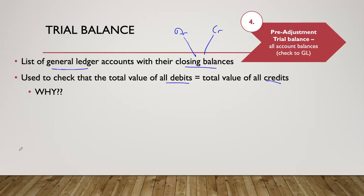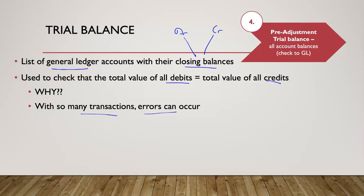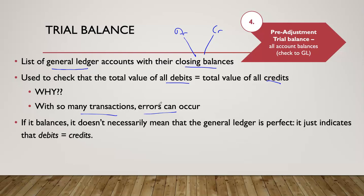Why do we make sure that all debits equal all credits? Because a business has so many transactions that errors can and will occur. We use this trial balance — a listing of closing balances — to find errors. If it balances, we're halfway to being confident there are no errors in our recording of debits and credits. But importantly, even if it balances, this doesn't necessarily mean the general ledger is perfect — it just indicates your debits equal your credits.